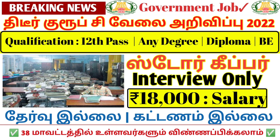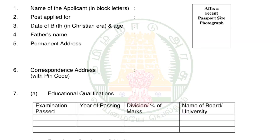If you want to check the first office, you will see the application form. This is the application form. You can click on the description box and click on the link.